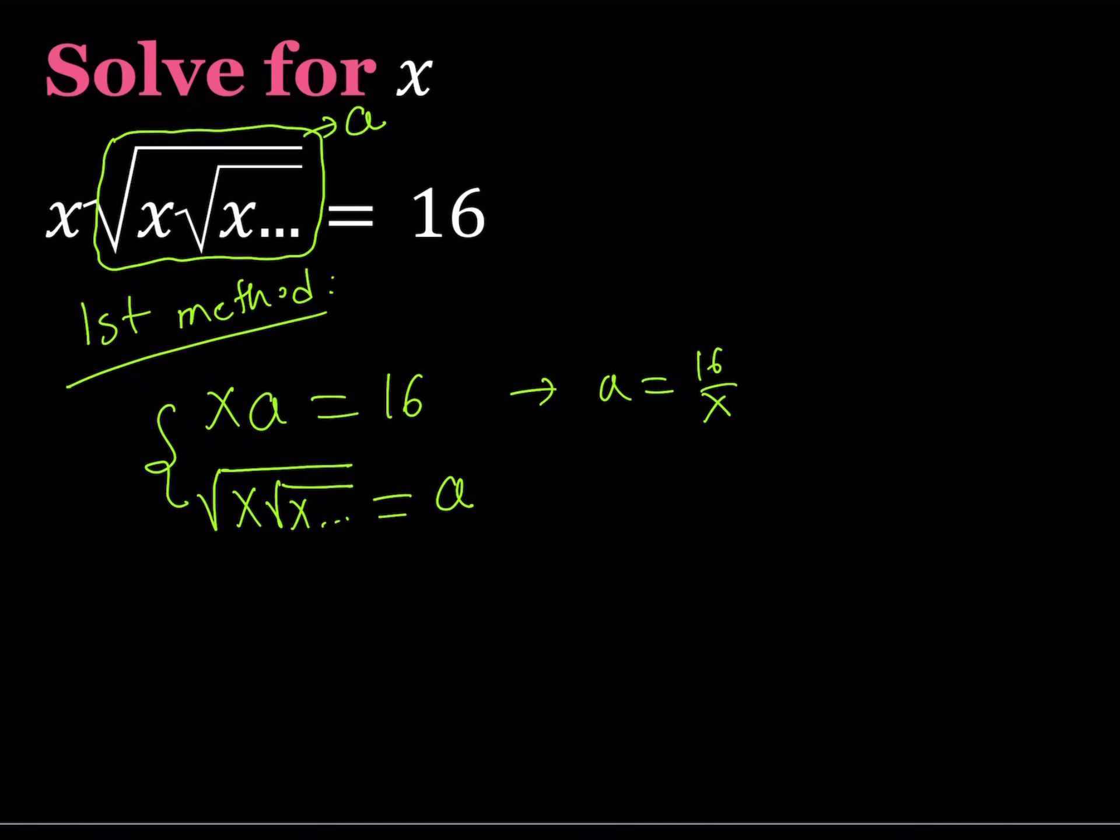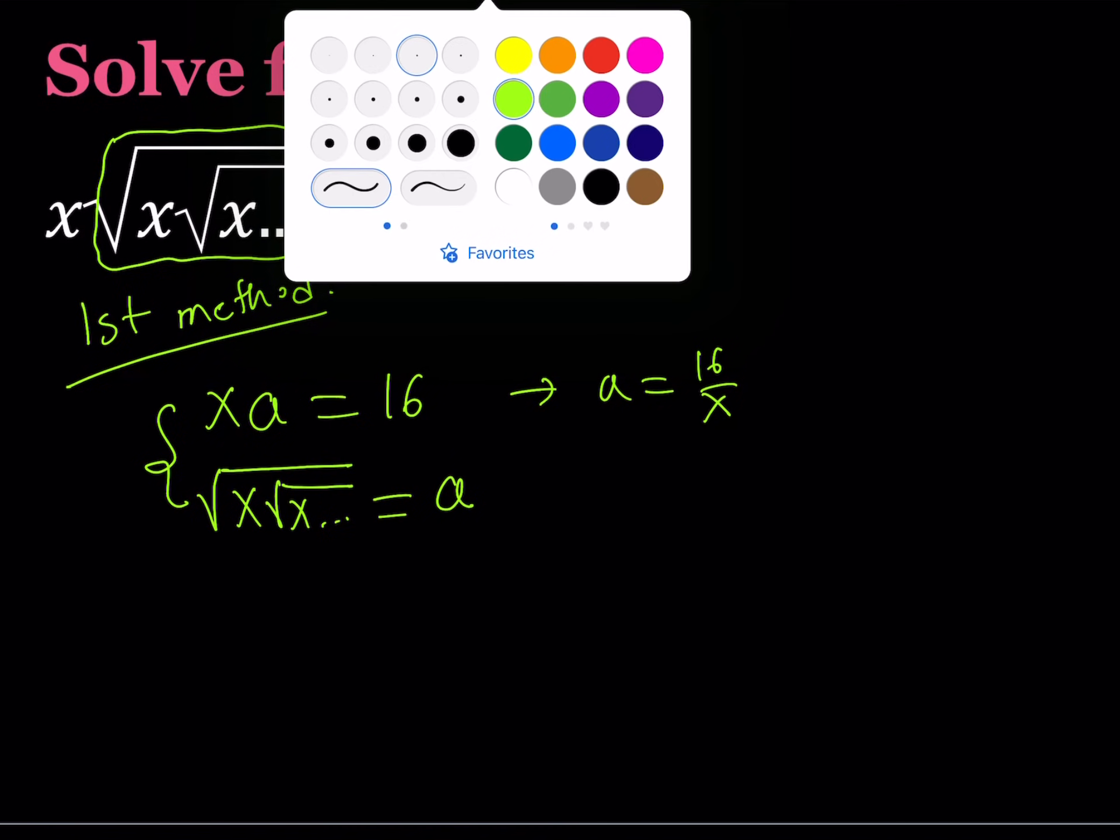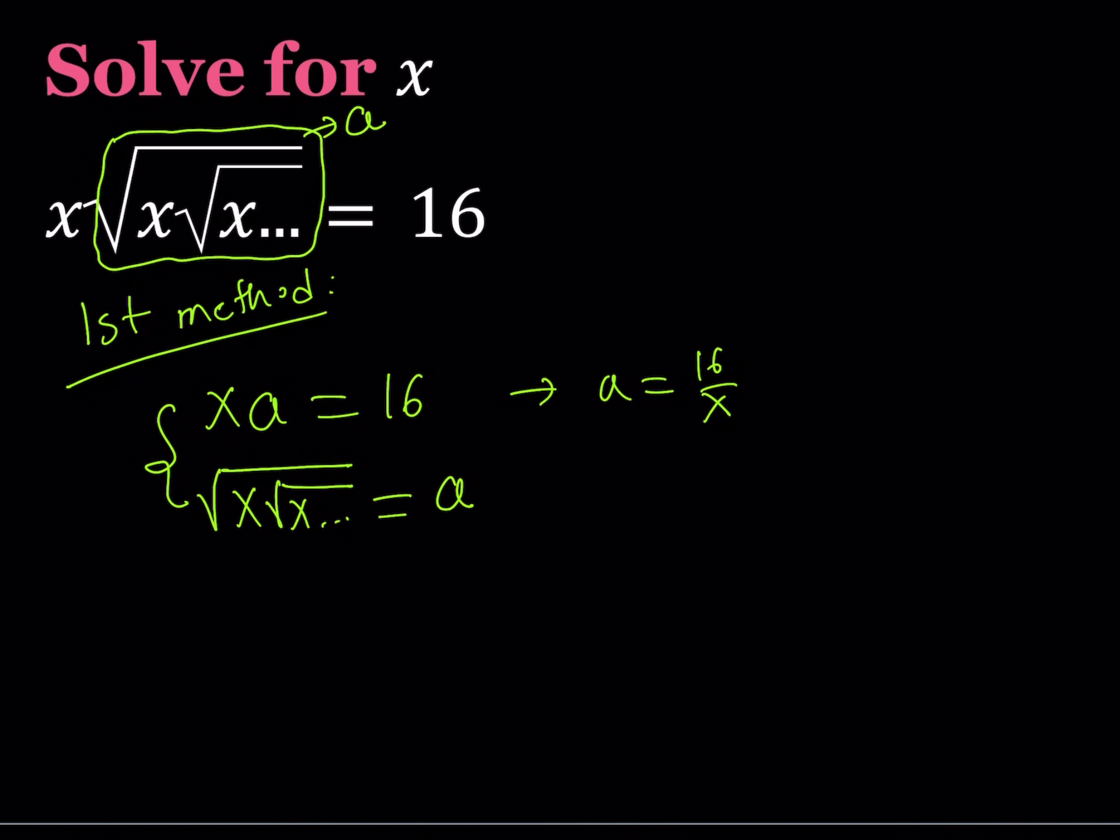Or you can just go ahead and take a look at the second equation. Now, notice that in the second equation, we see something that repeats all the time. So the square root of x times the square root of x. So since that expression is equal to a, this means that this part is also a.